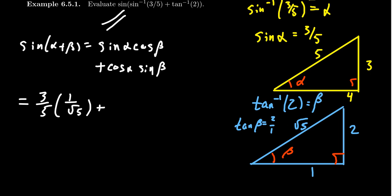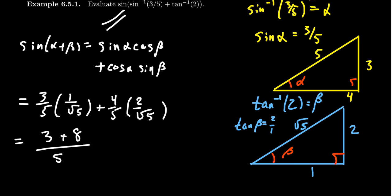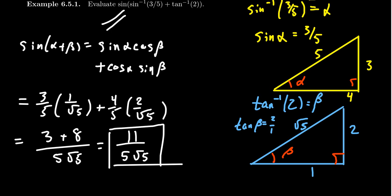Cosine of alpha is adjacent over hypotenuse, giving us four-fifths. And sine of beta is two over the square root of five. Putting these things together: three times one is three, four times two is eight, over the common denominator of five times the square root of five. Adding three and eight together, we get 11 over five times the square root of five. This is the exact value. So whenever you see inverse trigonometric functions, think of them as angles — this became an angle sum problem. The right triangle diagrams save the day when you have these inverse trigonometric functions.